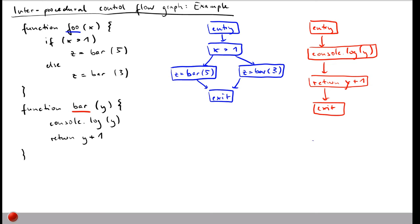To connect these two intra-procedural control flow graphs into an inter-procedural control flow graph, we look at all the call sites of bar — the two nodes that call bar — and connect those nodes to the entry node of the callee. So we add an edge from the first call site to bar's entry, and another edge from the second call site to bar's entry. Then we also add return edges from bar's exit node back to each call site in foo.